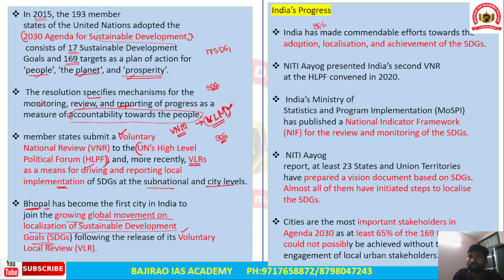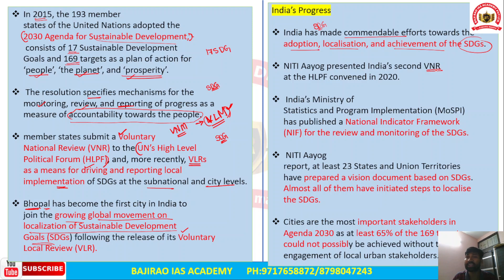Looking at India's overall progress, India has made commendable efforts toward the adoption, localization, and achievement of all SDGs. India has already submitted two Voluntary National Reviews to the United Nations High-Level Political Forum — NITI Aayog submitted VNRs in 2020. So India has submitted two VNRs in total.